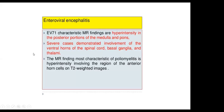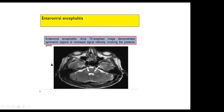Enterovirus encephalitis: characteristic MRI findings include hyperintense signal in the posterior portion of the medulla and pons. Severe cases demonstrate involvement of the ventral horn of the spinal cord, basal ganglia, and thalamus. The most characteristic MRI finding of poliomyelitis is hyperintensity involving the region of the anterior horn on T2-weighted images. A case shows bilateral symmetric involvement of the pons with hyperintensity on T2-weighted images.